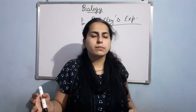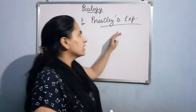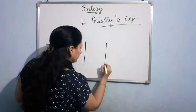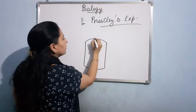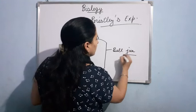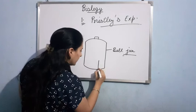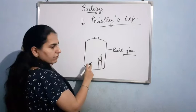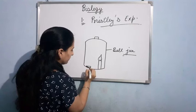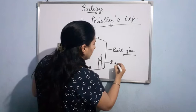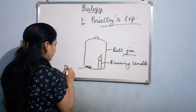In 1717, he did so many experiments to find out the process of photosynthesis. Firstly, what he did — he took a bell jar. In that bell jar, he placed a burning candle and a mouse.